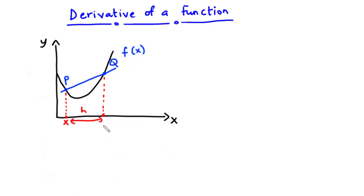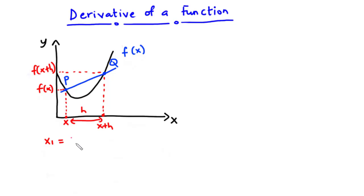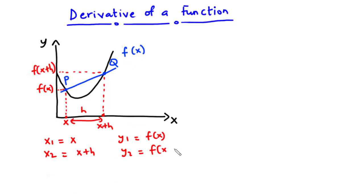So the new coordinate becomes x plus h. From point P to the y-axis that is f of x, and from point Q to the y-axis becomes f of x plus h. From the graph we have x₁ to be x, x₂ to be x plus h, y₁ to be f of x, and y₂ to be f of x plus h.